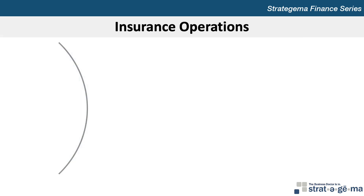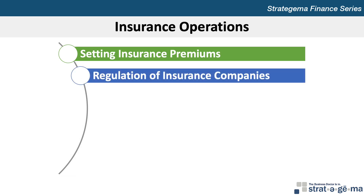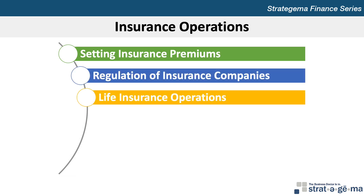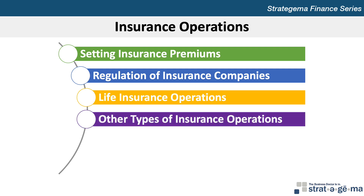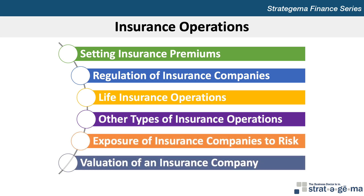Chapter 25 includes six key learning objectives. First, to explain how insurance premiums are determined. Second, to describe how insurance companies are regulated. Third, to describe the main operations of life insurance companies. Fourth, to describe the main operations of the types of insurance companies. Fifth, to explain the exposure of insurance companies to various forms of risk. And sixth, to identify the factors that affect the value of insurance companies.